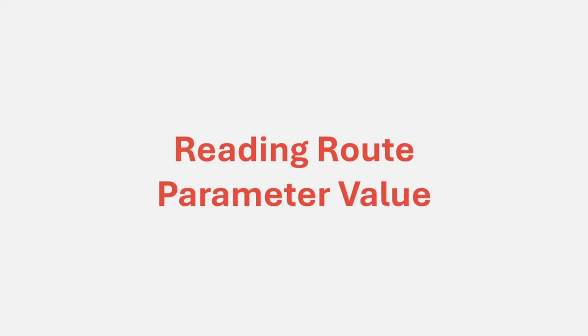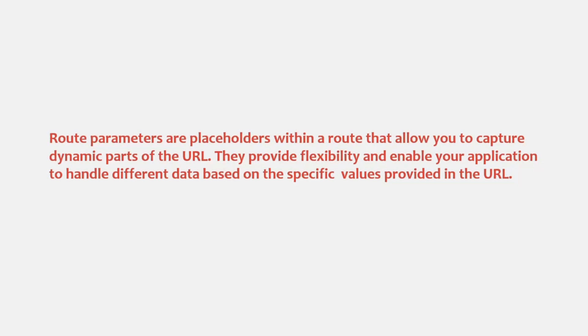In this lecture, we are briefly going to understand what is a route parameter and then we will learn how to read the value of a route parameter from within a controller. The route parameters are the placeholders within a route that allow you to capture dynamic parts of the URL. They provide flexibility and enable your application to handle different data based on the specific values provided in the URL.